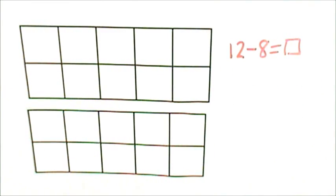Let's determine the difference of 12 minus 8 by building down through 10. That means subtracting to get to 10 and then subtracting until I get to 8.